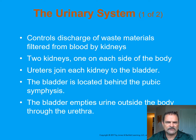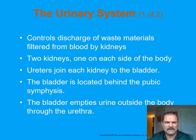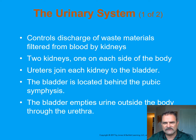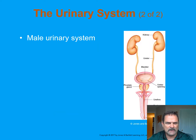The urinary system is responsible for controlling the discharge of certain waste materials filtered from the blood by the kidneys. There are two kidneys, one on each side of the body, located in the posterior retroperitoneal abdomen. Ureters join each kidney to the bladder. The urinary bladder is located immediately behind the pubic symphysis. The bladder empties to the outside through the urethra. Normal adults discharge approximately 1.5 to 2 liters of urine per day.